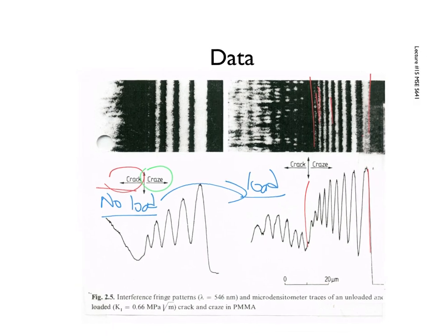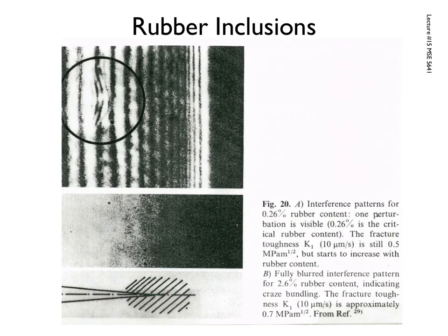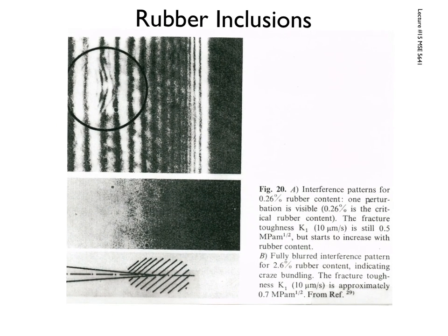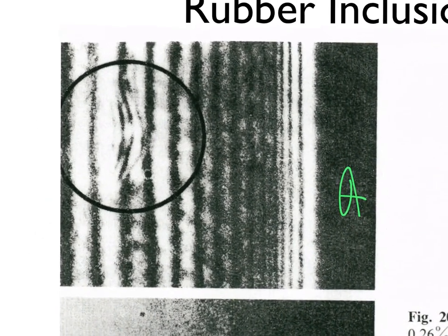This is the general tool that was really used to help figure things out, and this is an example of just how sensitive this technique is. This is showing interference patterns for 0.26% rubber content — I believe it's PMMA. And the one below it is B, this is A, and this is 2.6%. We're going to start with A because that's the most interesting one.